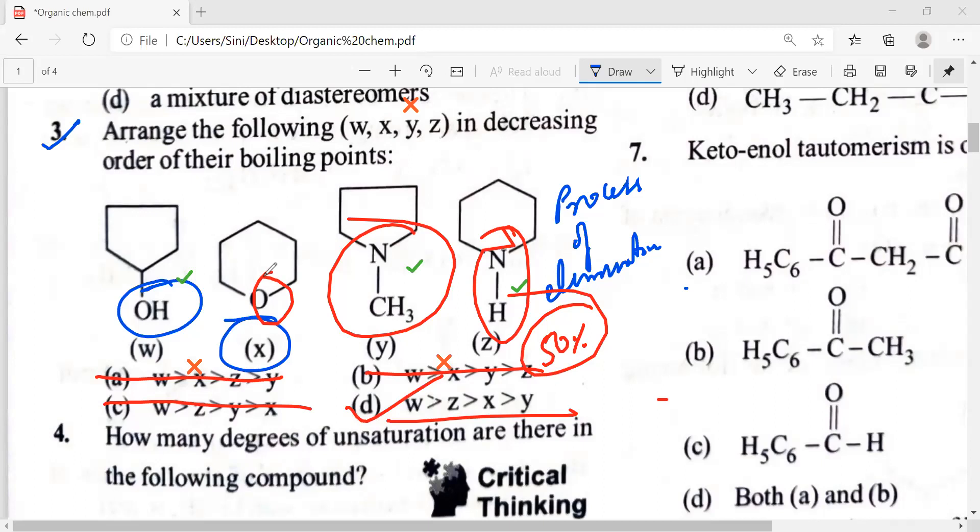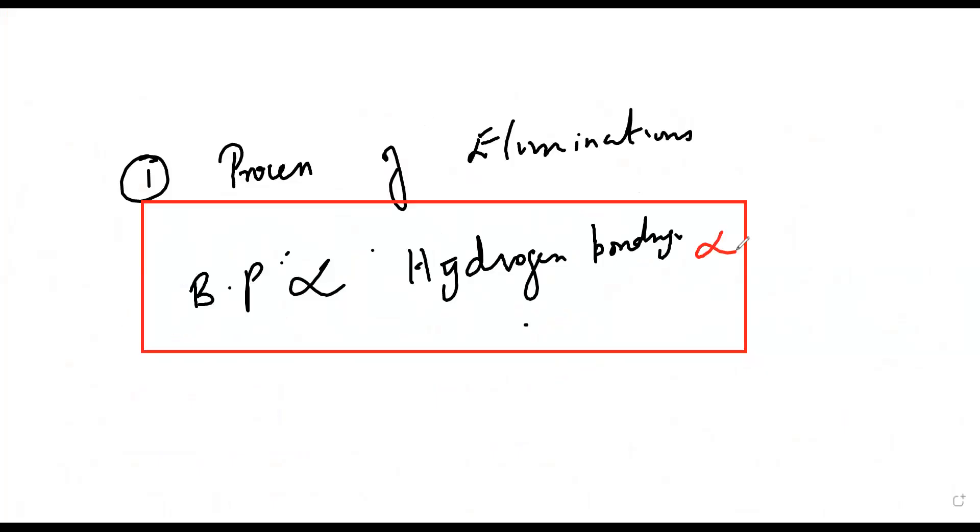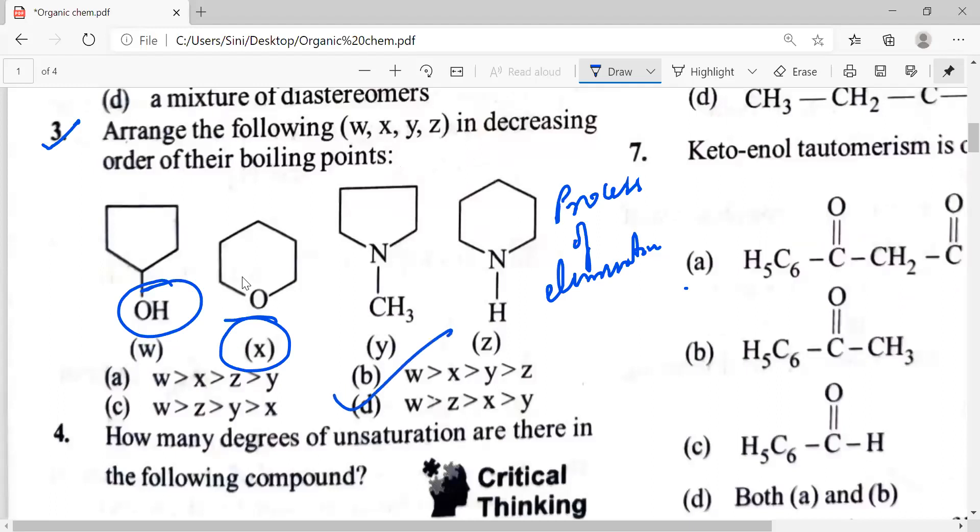Option c and option d, we clearly know that the boiling point is directly proportional to hydrogen bonding. And if the number of hydrogen bonding is more there, then it is directly proportional to the surface area of the molecule also. Surface is directly proportional to surface area of the molecule. So option d is the correct answer for this. For this question, option d I can take as the answer.